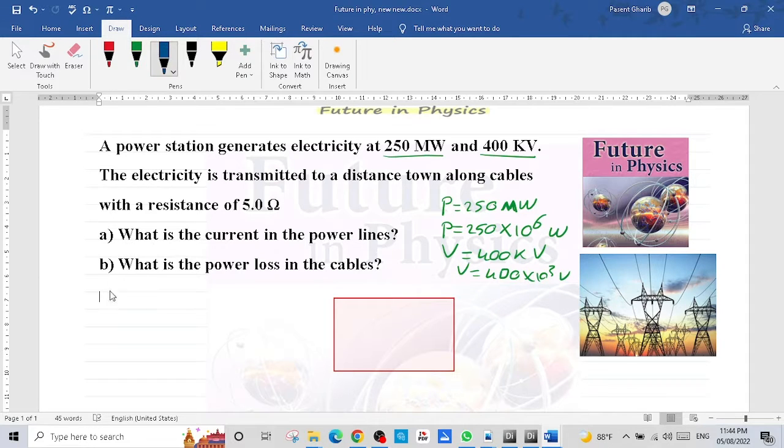Now, in part A, imagine this is the power station. So inside the power station, we have the value of the power. So the power equals 250 multiply 10 power 6 watt. And the voltage of the power station, 400 multiply 10 power 3 volt.